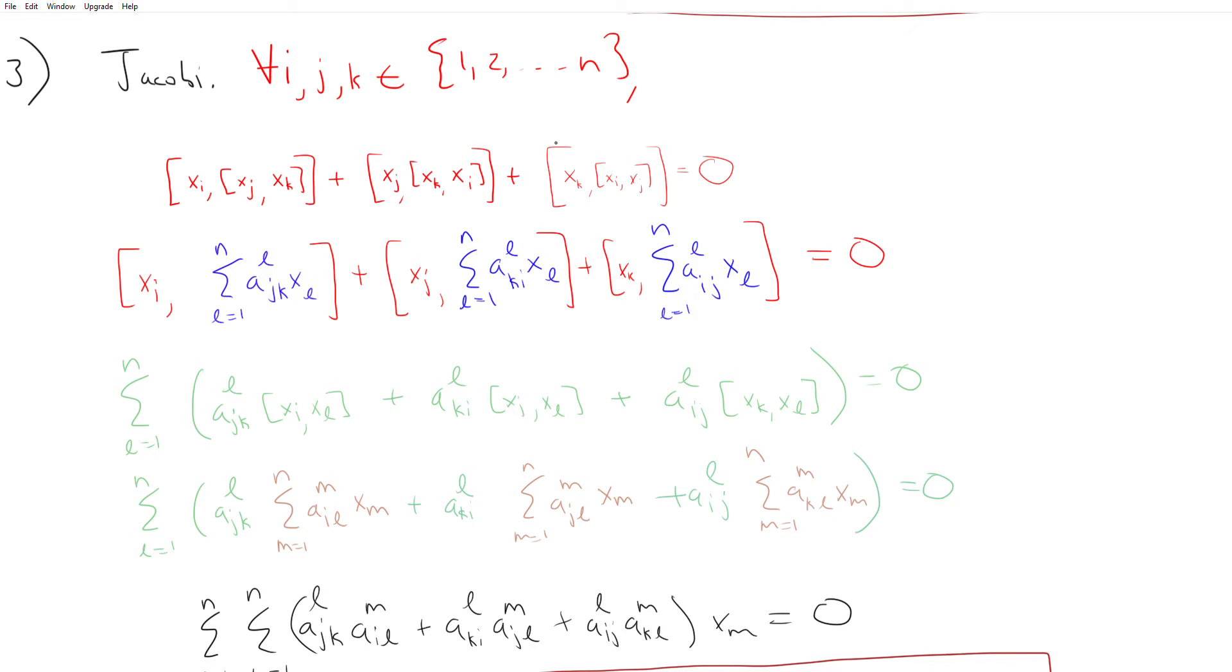So if you take any three basis vectors in your space, then you want them to satisfy the Jacobi identity. And so now we actually can expand out this bracket because you gave me a set of structure constants. And so by expanding it all out and grouping like terms,